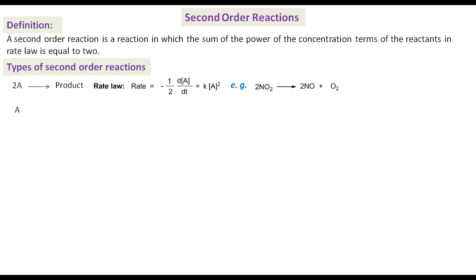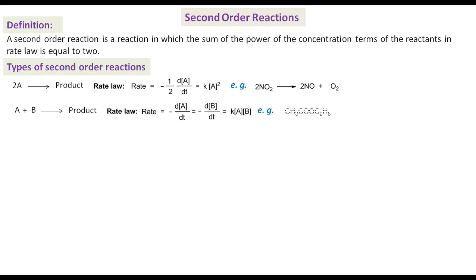In type 2, two different molecules A and B react with each other to form product. The rate law for this type of reaction is expressed as: rate = -dA/dt = -dB/dt = K[A][B]. Hydrolysis of an ester like ethyl acetate under alkaline conditions is an example of this type of second order reaction.